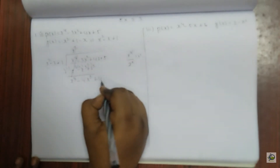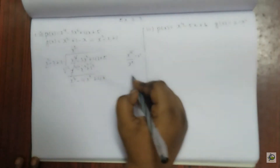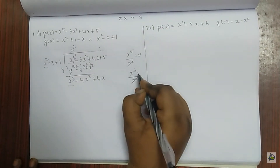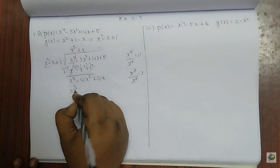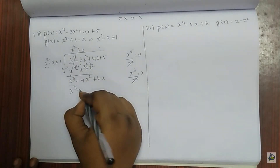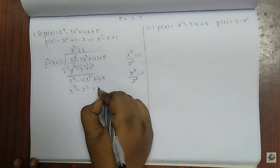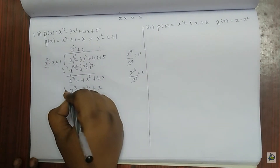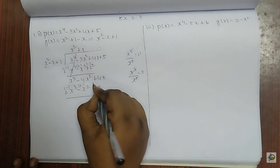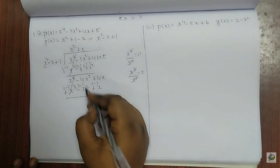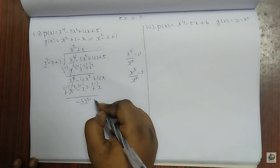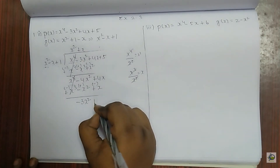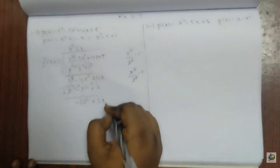Now I bring the 4x down. Again I have to divide: x cube divided by x square gives x. So plus x. When multiplied, it gives x cube minus x square plus x. Now I change the sign — it becomes minus, plus, and minus. These two get cancelled. Minus 4 plus 1 is minus 3, so minus 3 x square. Plus 4 minus 1 is plus 3x. I bring this 5 down.